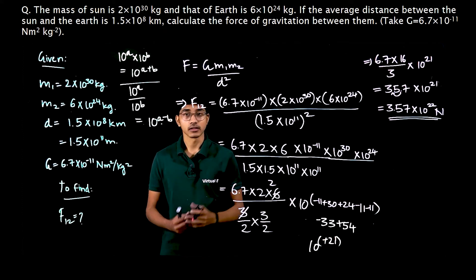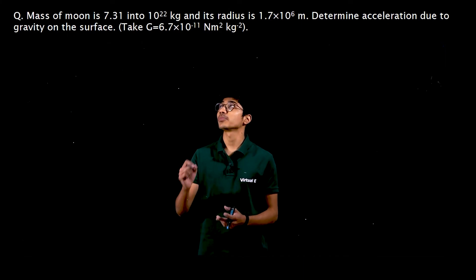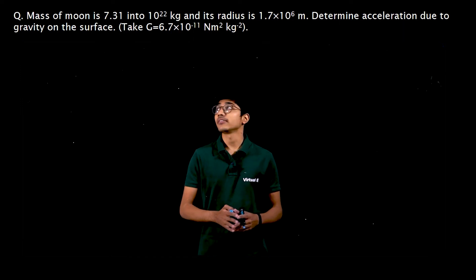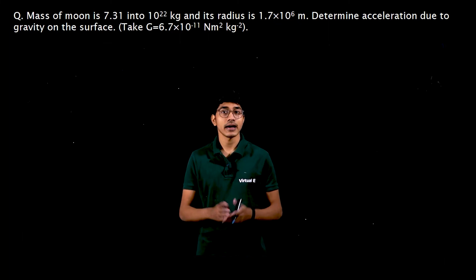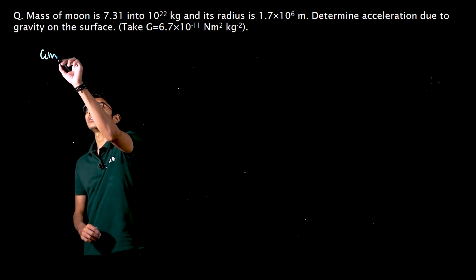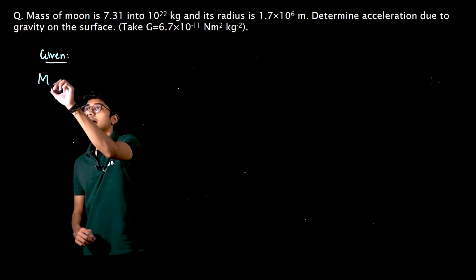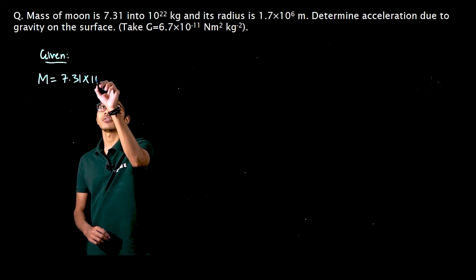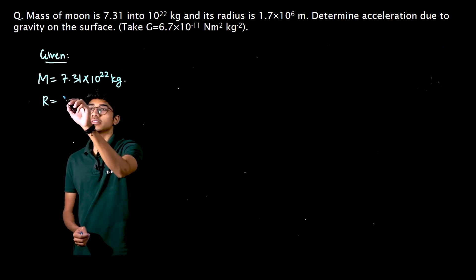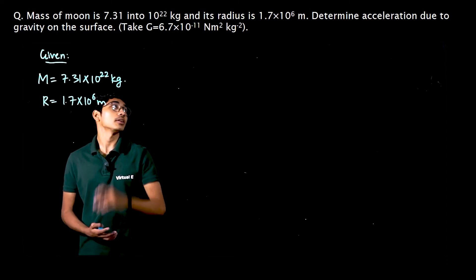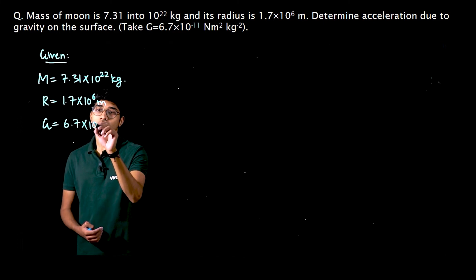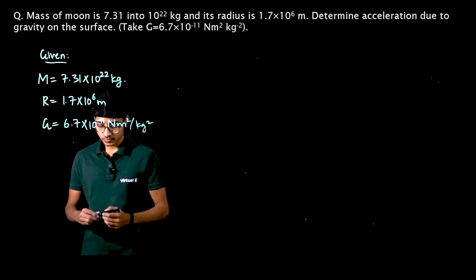Now in this question it is given that the mass of moon is 7.31 into 10 raise to 22 kilograms and its radius is 1.7 into 10 raise to 6 meters. Determine acceleration due to gravity on its surface. It is also given that the universal gravitational constant G is 6.67 into 10 raise to minus 11 newton meter square per kg square. Very simple question — let's write what is given: mass of moon M is 7.31 into 10 raise to 22 kilograms, radius R is 1.7 into 10 raise to 6 meters, both in SI units.